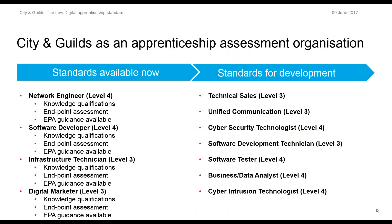City and Guilds currently provides a full assessment and on-programme package for Network Engineer, Software Developer, Infrastructure Technician and Digital Marketer. That includes knowledge qualifications where available, vendor certificates, the end point assessment itself, and significant guidance on how to prepare apprentices for the endpoint assessment. We are also looking at Technical Sales, Unified Communication Specialist, and Cyber Security Technologist, as well as Software Development Technician, Software Tester, Business Data Analyst, and Cyber Intrusion Technologist.